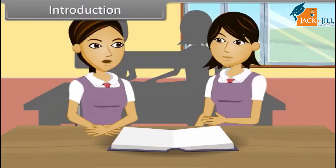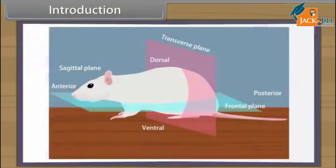On the basis of level of organization, animals either have cellular organization, e.g. sponges, or tissue organization, e.g. cnidarians. According to symmetry, animals are either radially symmetrical, e.g. sponges, cnidarians, and echinoderms, or bilaterally symmetrical, e.g. nematodes, arthropods, annelids, and vertebrates.